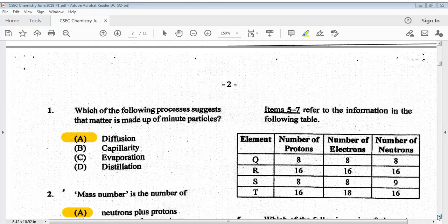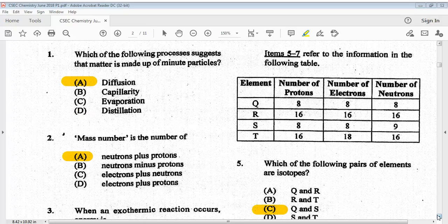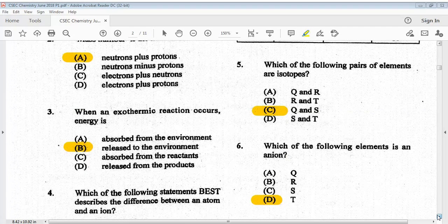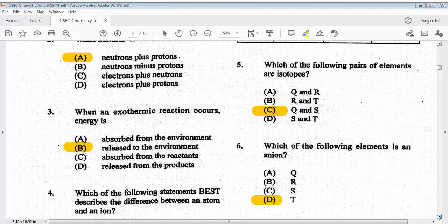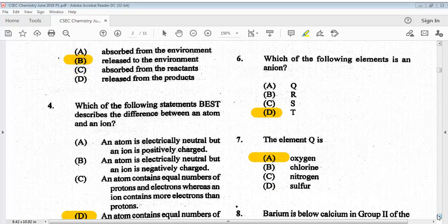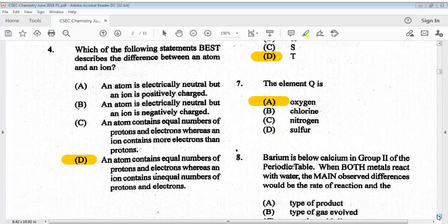Question one: which of the following processes suggests that matter is made up of minute particles? The answer is A, diffusion. Question two: mass number is the number of? The answer is A, neutrons plus protons. Question three: when an exothermic reaction occurs, energy is? The answer is B, released to the environment. Question four: which of the following statements best describes the difference between an atom and an ion? The answer is D, an atom contains equal numbers of protons and electrons, whereas an ion contains unequal numbers of protons and electrons.